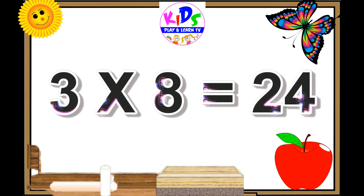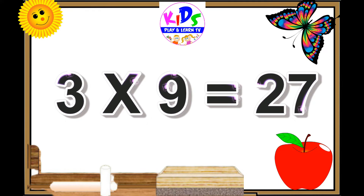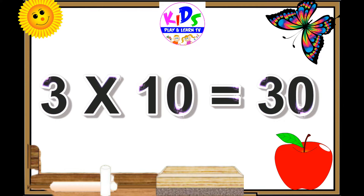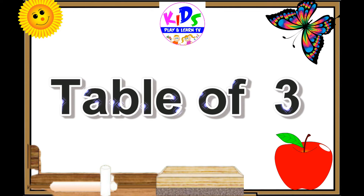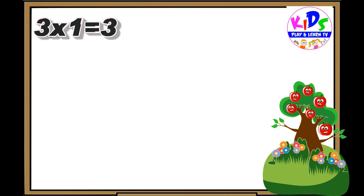Three sevens are twenty-one. Three eights are twenty-four. Three nines are twenty-seven. Three tens are thirty.